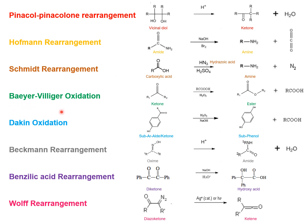In Baeyer-Villiger oxidation, the reactant is a ketone. This ketone reacts with either a peroxy acid (per-acid) or hydrogen peroxide, and the reagent donates one oxygen to the ketone to form an ester. A per-acid is a carboxylic acid containing an additional oxygen — a regular carboxylic acid has two oxygens (COOH), while a per-acid has three. For example, using peracetic acid (CH3COOOH), it donates one oxygen and acetic acid is formed as a by-product.